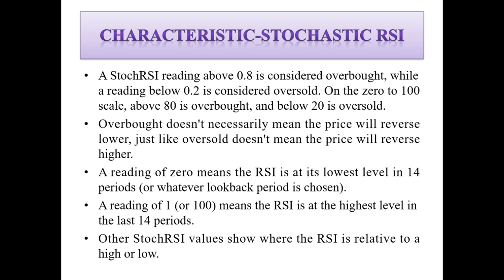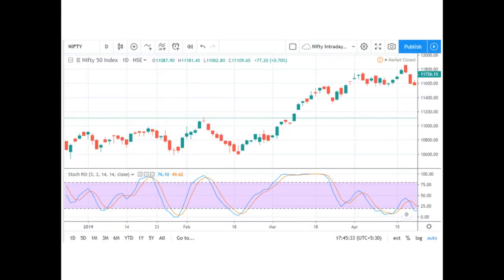A reading of zero means the RSI is at its lowest level in 14 periods, or whatever look-back period is chosen — the general default is 14. A reading of 1 or 100 means the RSI is at its highest level in the last 14 periods. Other Stochastic RSI values show where the RSI is relative to its high or low range. Here we have applied the 14-period Stochastic RSI on the chart.